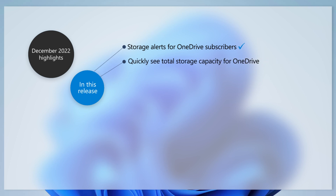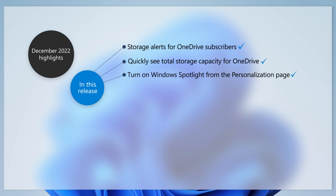In addition, we now make it easy to see the full amount of the storage capacity of your OneDrive subscriptions. The total storage appears on the Accounts page in the Settings app. For Windows Spotlight, we've combined it with Themes on the Personalization page. This makes it easier for you to discover and turn on the feature.